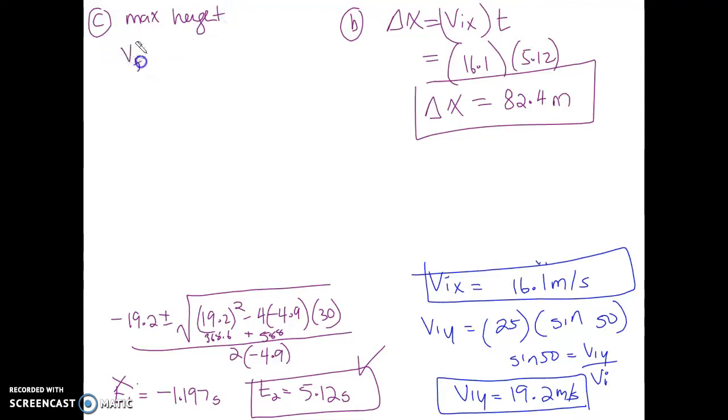We're going to do vfy squared equals viy squared plus 2a times delta y. Now vfy of course is zero at the top of its motion. viy was 19.2 squared plus two times negative 9.8 times delta y—this is maximum height. So this becomes 368.6 minus 19.6 delta y.